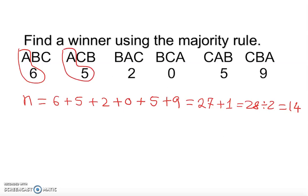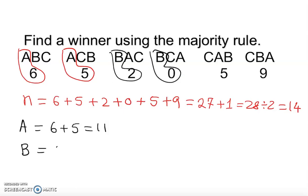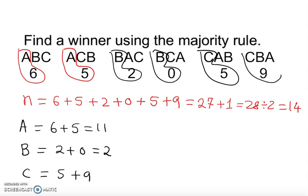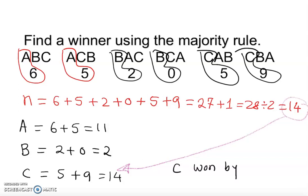Now let's see who got how many votes. Adam got 6 + 5 = 11 votes. Baker got 2 + 0 = 2 votes — very low. And Cynthia got 5 + 9 = 14 votes. Bingo! This time we do have a winner — Cynthia wins by majority rule.